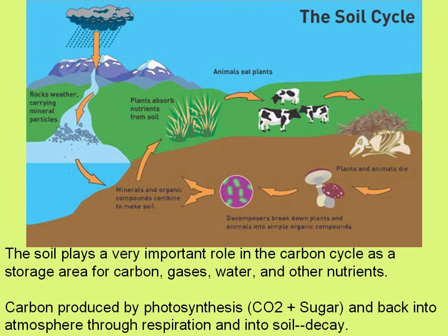Soil is a very important player in the global carbon cycle, as it's the area where a lot of carbon, gases, water, and nutrients are stored. Carbon produced by photosynthesis goes back into the atmosphere through respiration, and into the soil when plants and animals die and begin to decay.